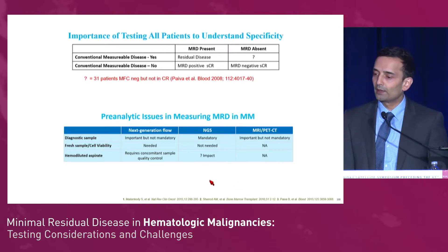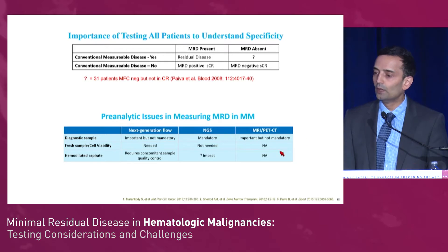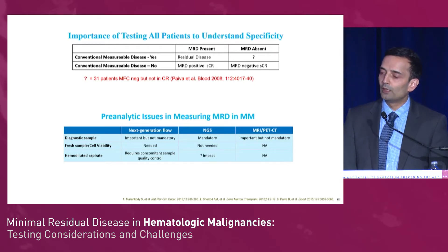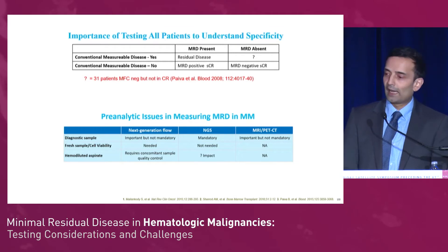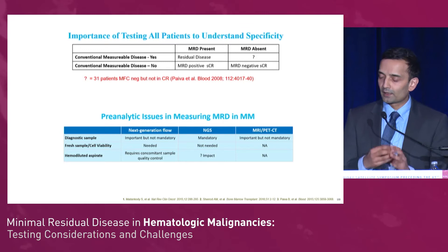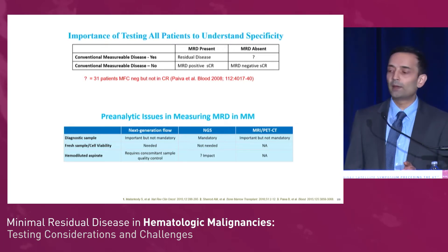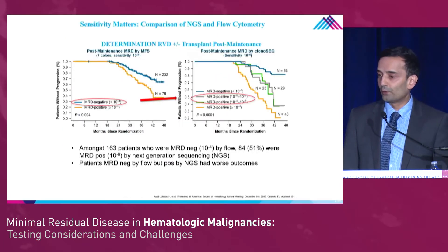You already heard about pre-analytic issues. You need the baseline specimen for next-gen sequencing, which you don't need for flow, and obviously you don't need these for PET scan. Hemodilution is a big issue in myeloma. When you do marrow in myeloma, the best marrow estimate is the core biopsy followed by aspirate — and flow is almost useless to assess bone marrow involvement because plasma cells are often lipophilic, and when you take them out of the marrow, you really underestimate marrow involvement.